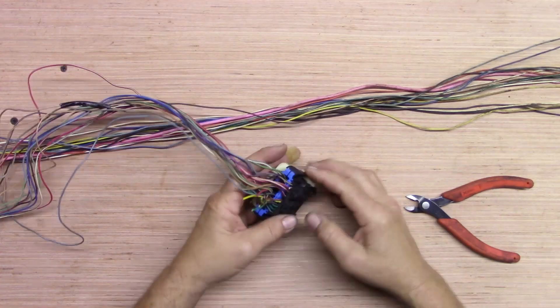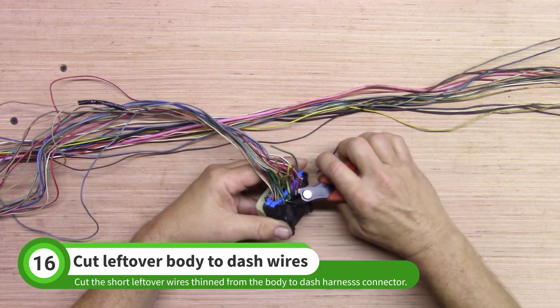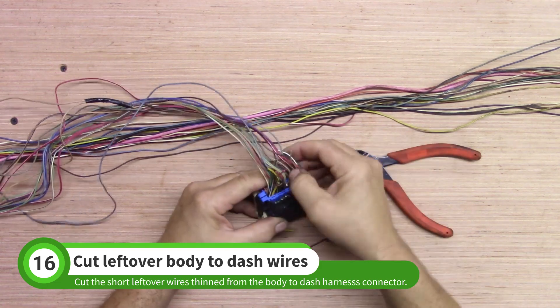Next, we'll start working on the large body to dash harness. Many of the wires were cut while the harness was being thinned. Go ahead and trim all of these wires close to the connector to get them out of the way.